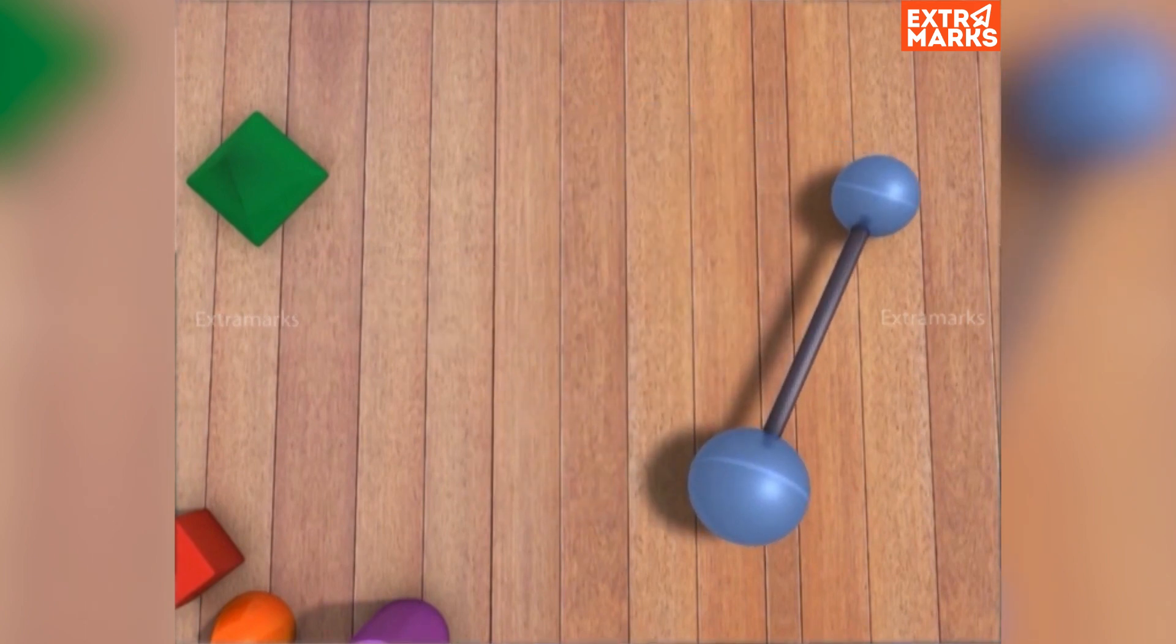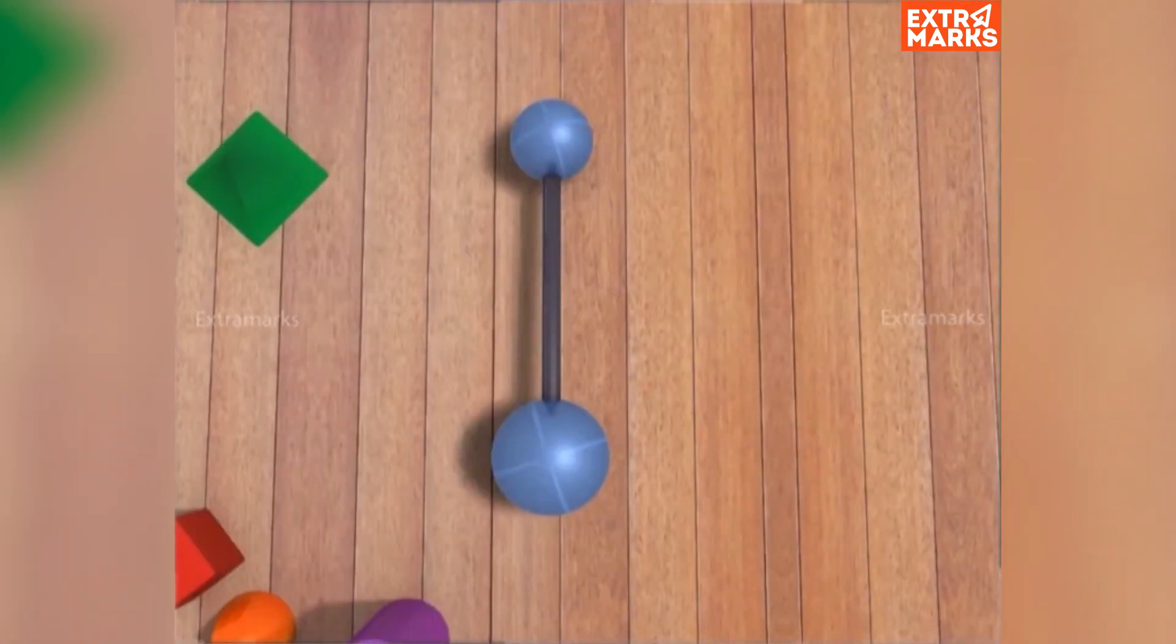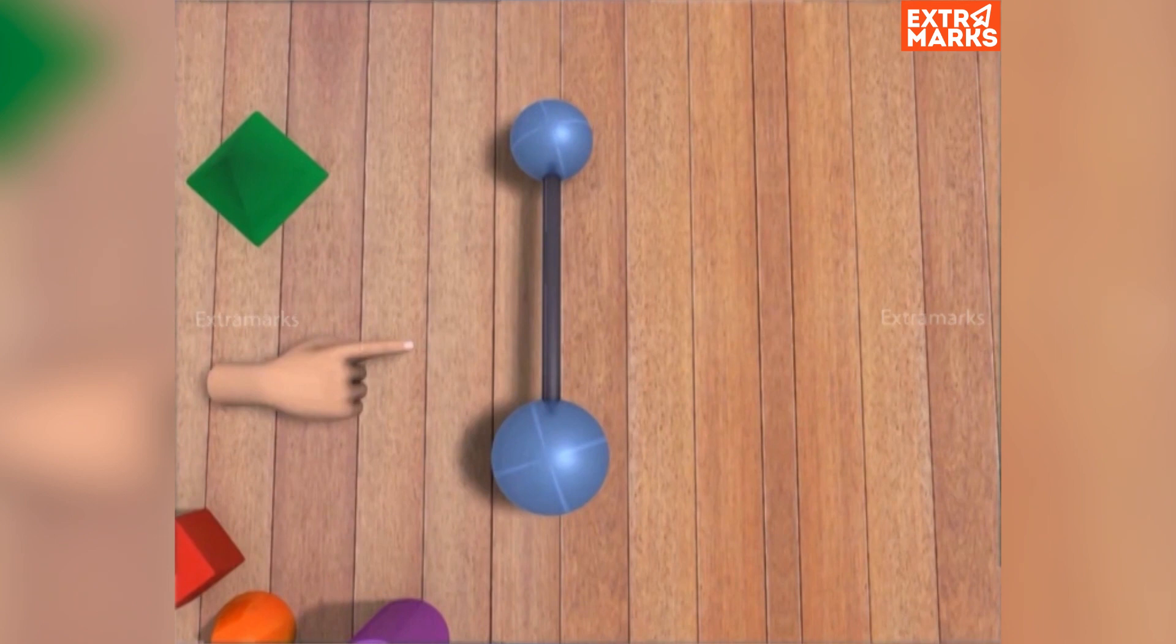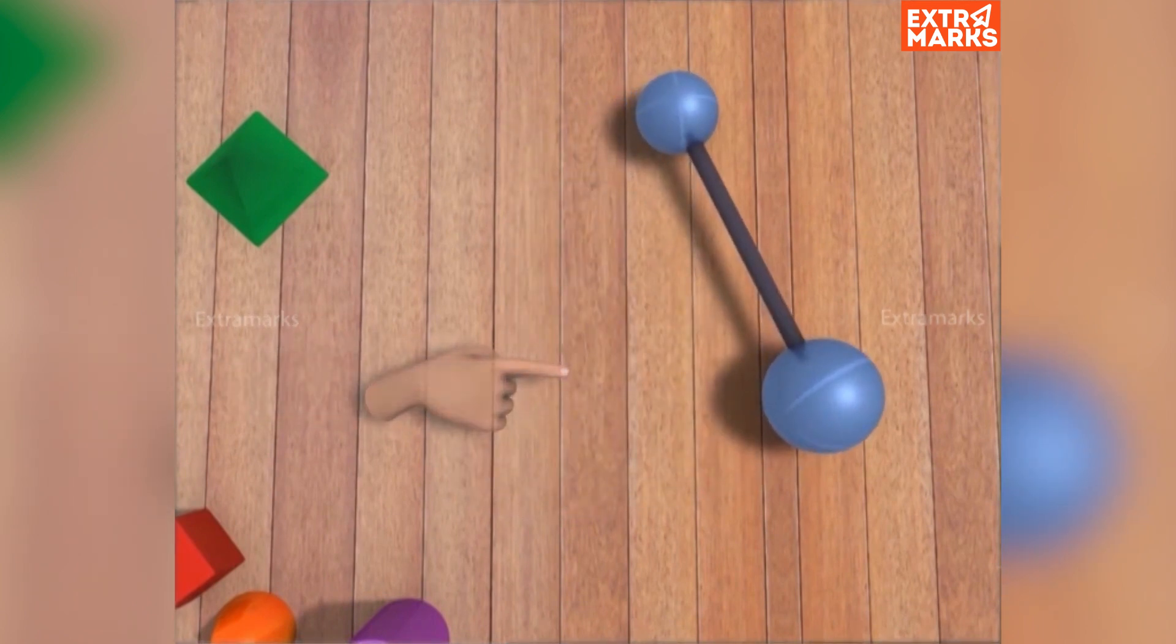Now the force is applied at a point nearer to the heavier particle. The system rotates in counterclockwise direction. Hence, the center of mass lies at a point in the lower half of the rod, nearer to the heavier particle.